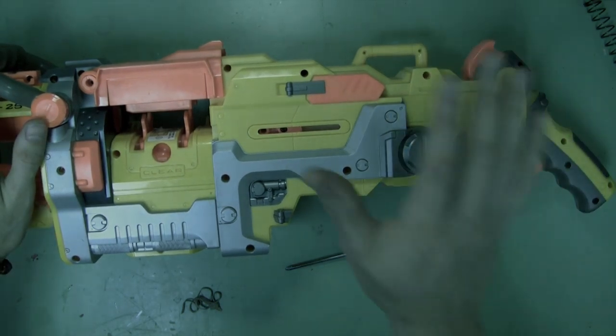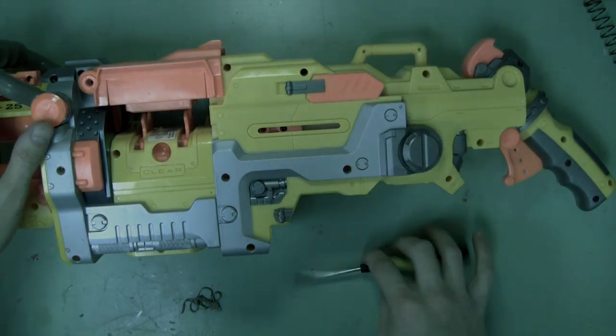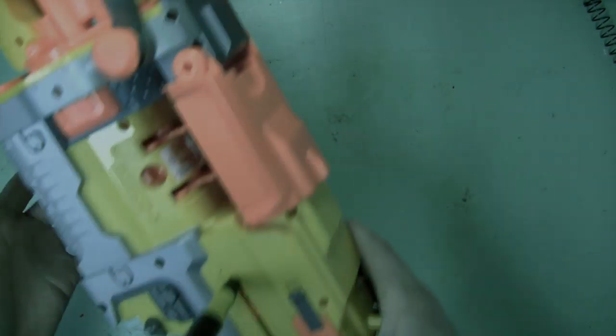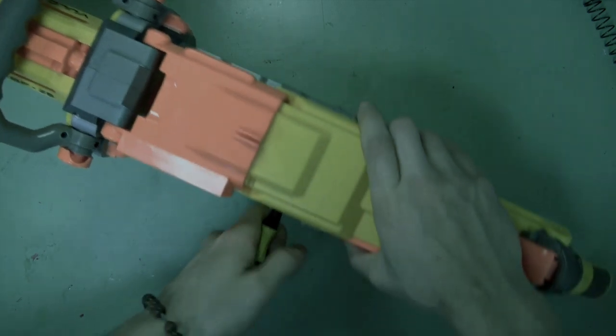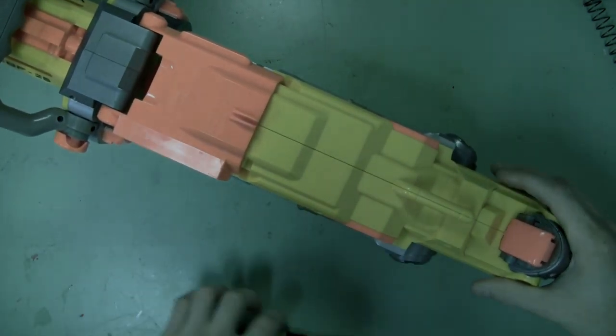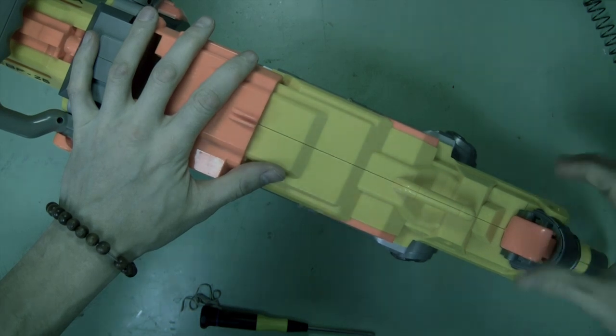Next you can function check it by priming using the priming handle. I don't have it installed here. So I'm going to try and use a screwdriver. Looks like it works. We're good to go.